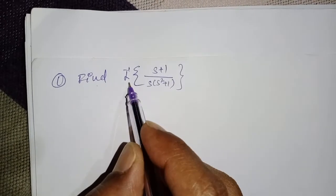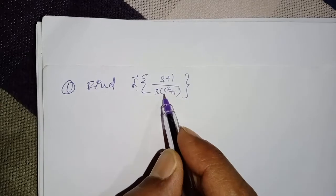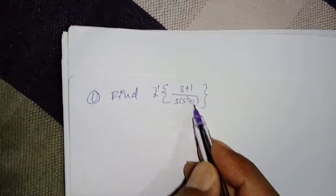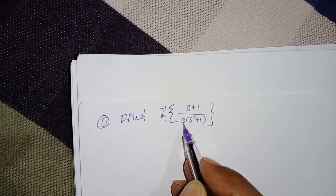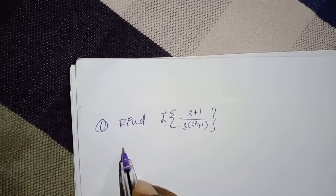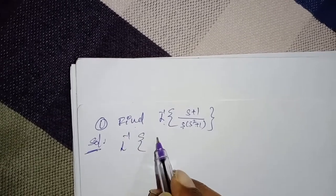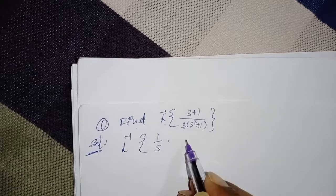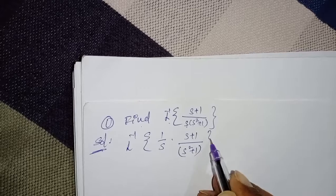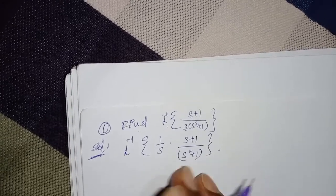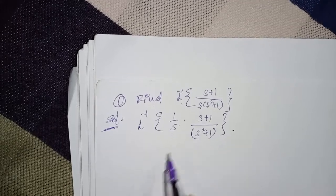Find L inverse of (s+1) / [s(s²+1)]. This is a division by powers of s method. We can write the solution as L inverse of [1/s] times [(s+1)/(s²+1)], where this is division of powers of s.